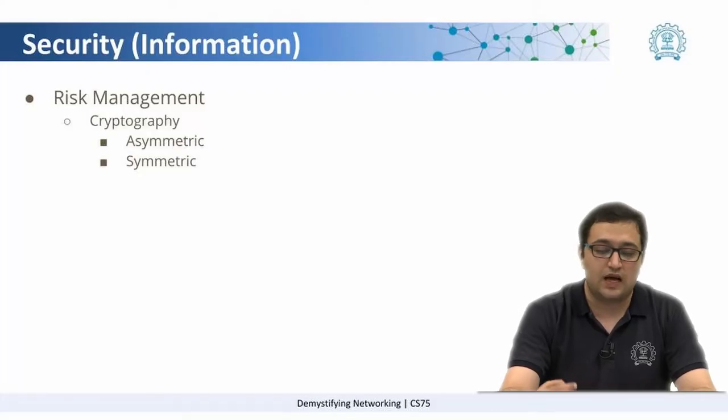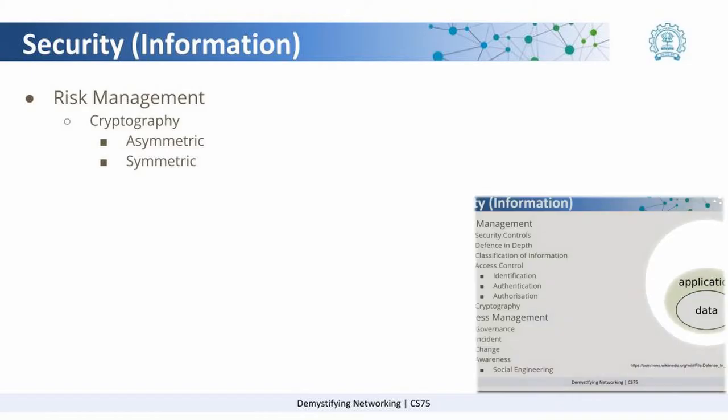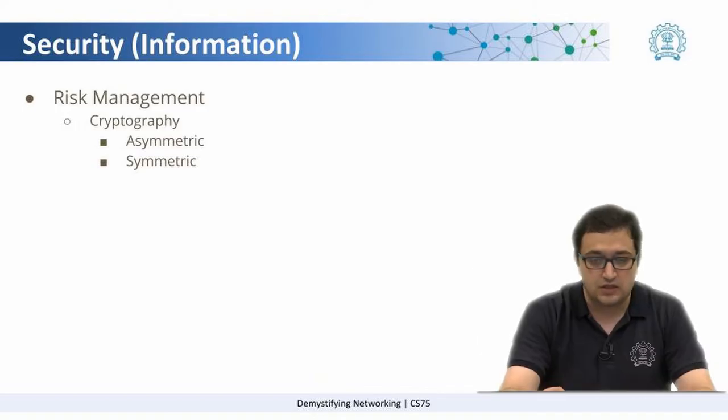Let us come to the next point which is cryptography. Cryptography, as we saw in the earlier example, is about changing the human readable form of information, and this is done via some complex mathematical algorithms.